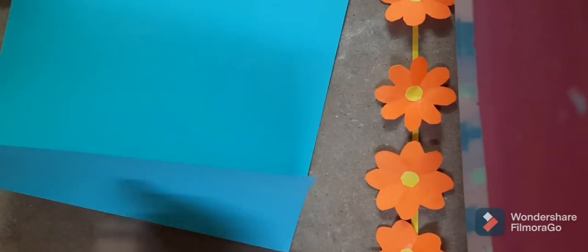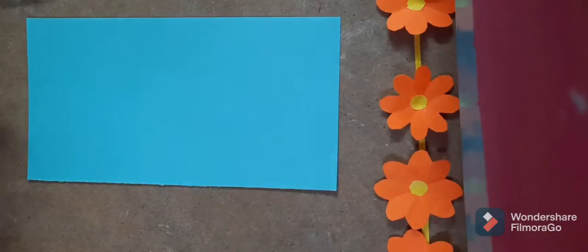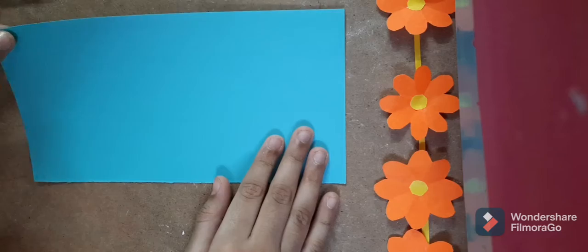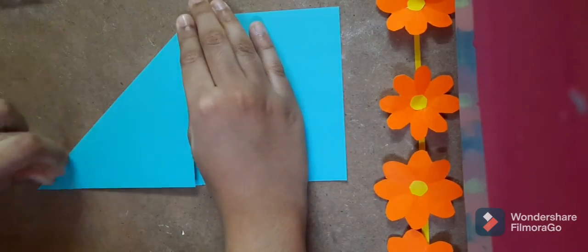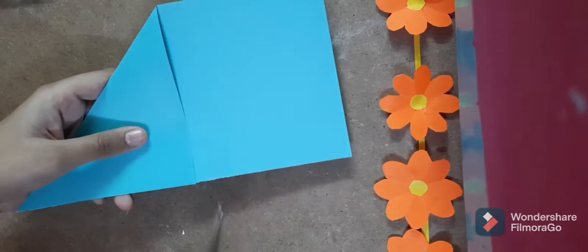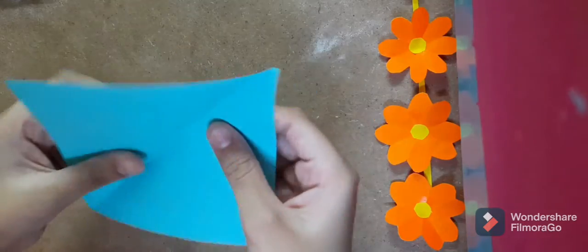After this, you're going to cut this out. And when you get your paper, you're going to take the top corner and fold it into the middle, and you're going to cut this square out.